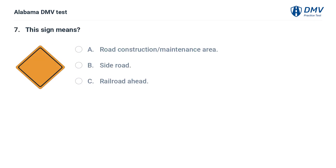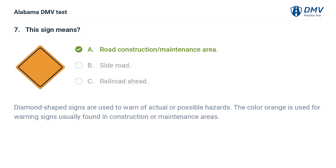This sign means: A. Road construction/maintenance area. B. Side road. C. Railroad ahead. Correct answer: A. Diamond-shaped signs are used to warn of actual or possible hazards. The color orange is used for warning signs usually found in construction or maintenance areas.